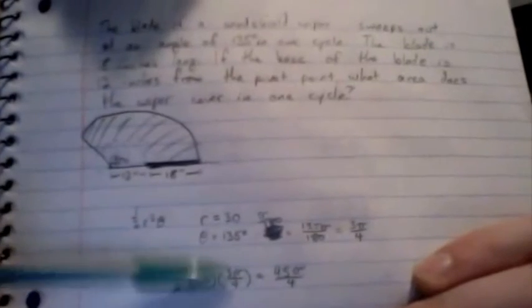Multiply it all through, and we get 45π over 4. I'm going to leave it like that and wait until the end to round. So now we just have to set up the same equation, except r is going to be 12. So when we plug that in, we get 18π over 4.